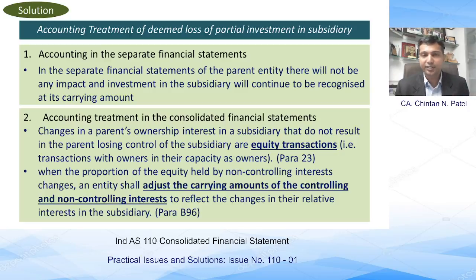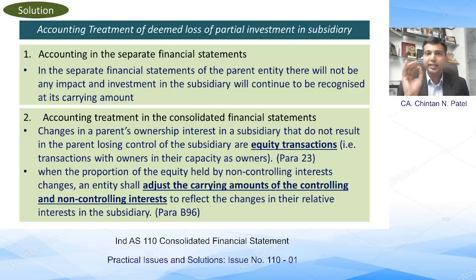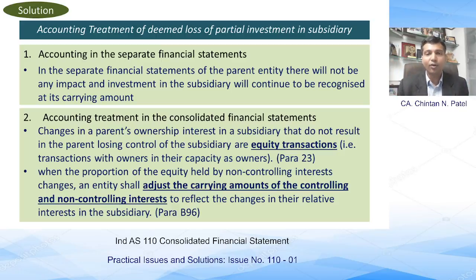As far as the consolidated financial statements are concerned, what is happening is that there is a reduction in the controlling power of the parent, and thereby there is an increase in the non-controlling interest (NCI). In consolidated financial statements, when we look at equity, there is a portion of NCI disclosed separately. There is a movement — an increase — in the portion of non-controlling interest because of the issuance of additional shares.